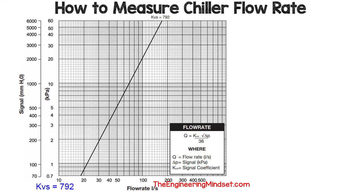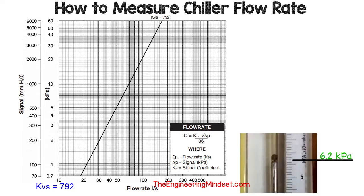The manufacturer will usually also provide a chart so you can perform a quick lookup. Mark our reading on the chart — which was 6.2 kilopascals — on the y-axis, then draw a horizontal line across until it hits the KVS line. From there, draw a line vertically downward to read off the flow rate. Here you can see it gives a flow rate of around 55 litres per second.